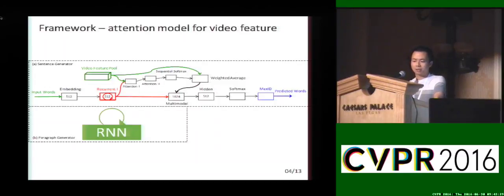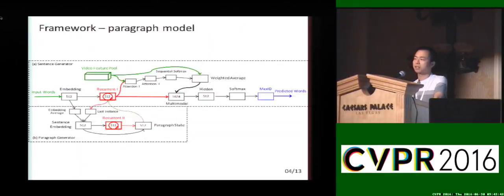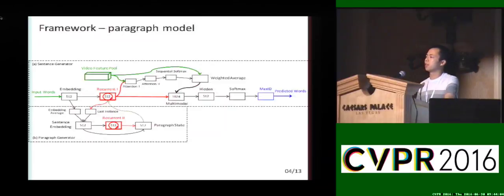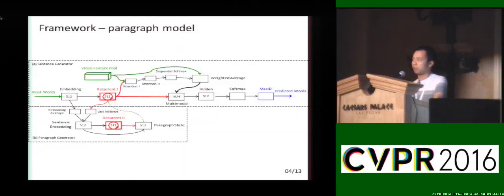After one complete sentence is generated, the paragraph generator takes the last instance of the recurrent state sequence and also computes an average embedding of the words in the sentence. It combines these into a sentence embedding, which is input to recurrent layer 2. Recurrent layer 2 summarizes all the sentences seen so far in the paragraph and outputs the paragraph state, which is then used as the initial state for the sentence generator to generate the next sentence.